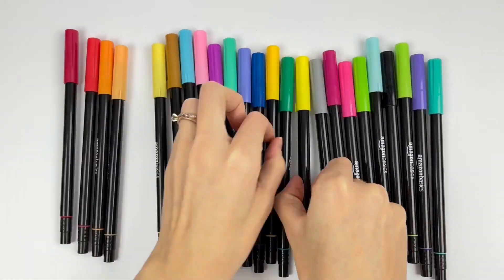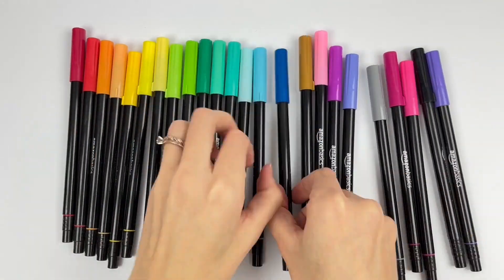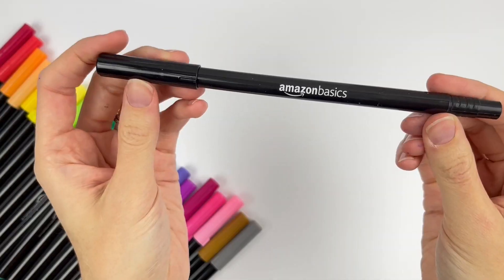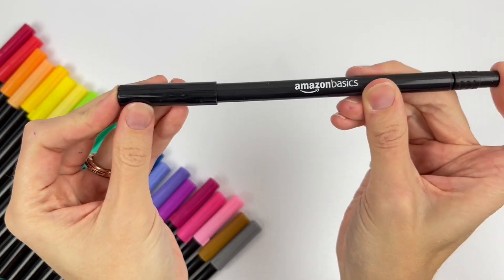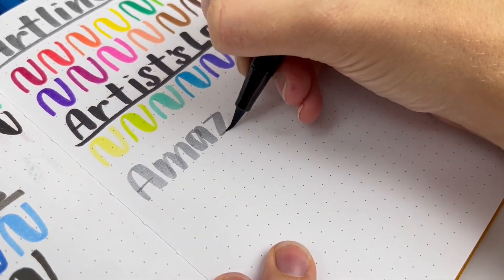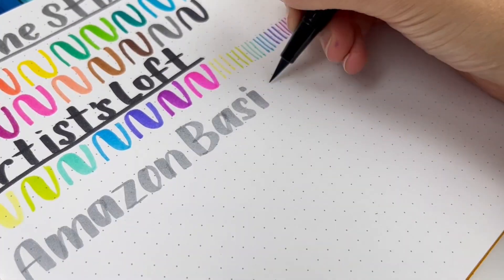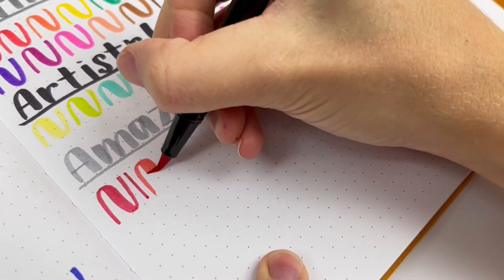Next, we have Amazon Basics Brush Pens. I have a full review video on these. I think these are great, and I actually like the brush tip better than Tombow. It's skinnier, which somehow makes it bouncier or something, so it's a little easier to control.